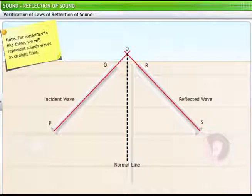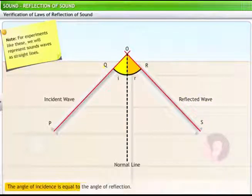Let's now measure the angle between the axis of the pipe PQ and the normal to the wall at the point O. This is the angle of incidence I for the incident sound wave. Now, we'll measure the angle between the axis of the pipe RS and the normal to the wall at the point O. This is the angle of reflection R for the reflected sound wave. You can see that the angle of incidence is equal to the angle of reflection.